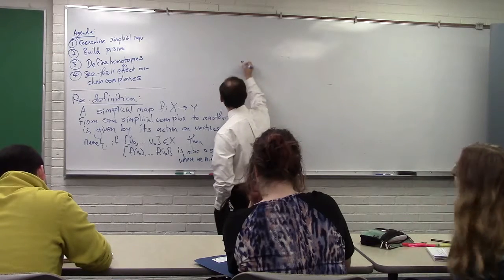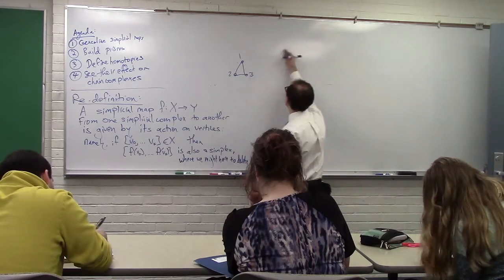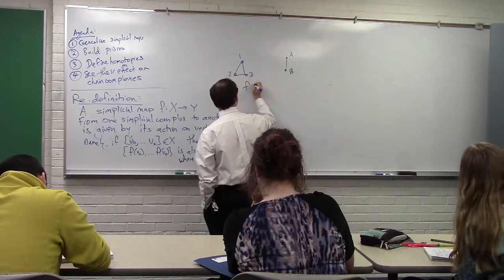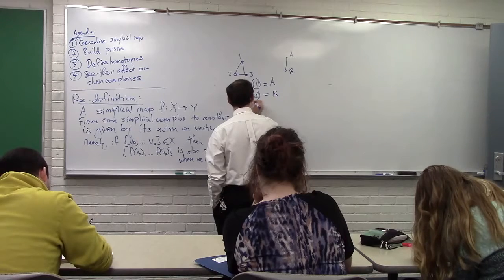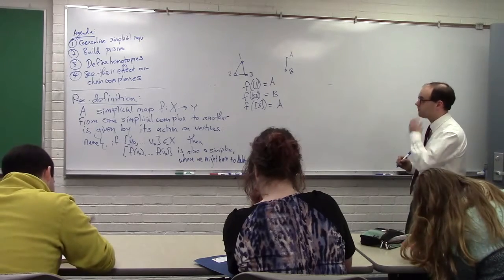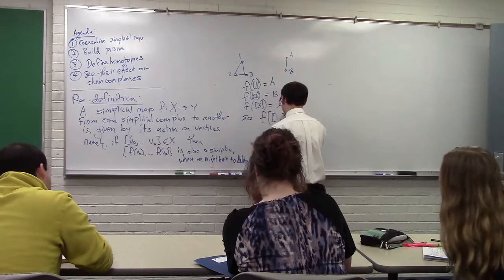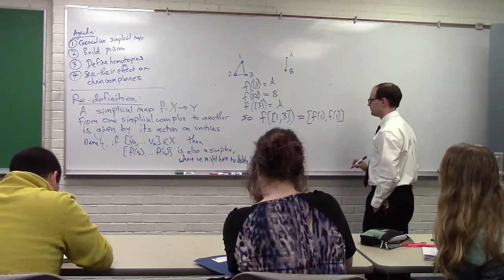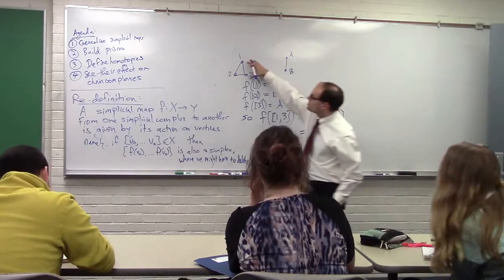Here's the picture: we have two abstract simplicial complexes. What our old definition could not accommodate is the situation where by the pigeonhole principle we might have to send vertex 3 somewhere — to a or b. So f of {1, 3} would give f(1) = a, f(3) = a — that's a duplicate. So we interpret that as the vertex a, having collapsed this edge down to a single point.